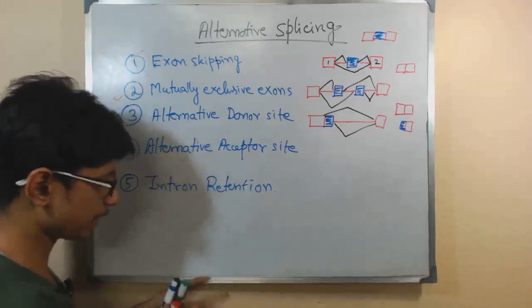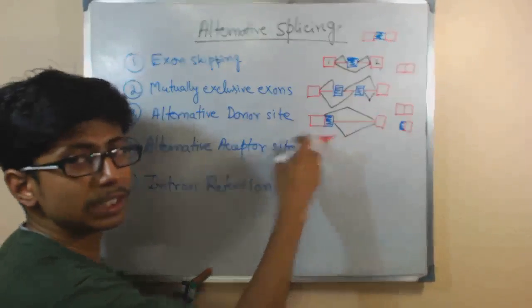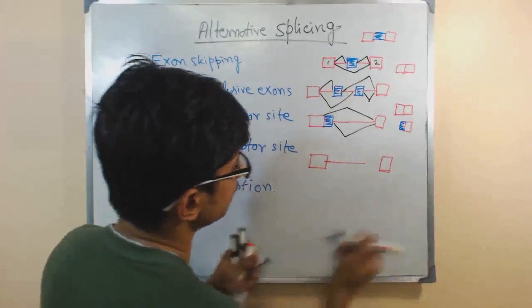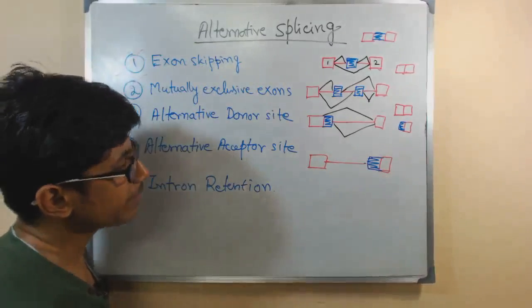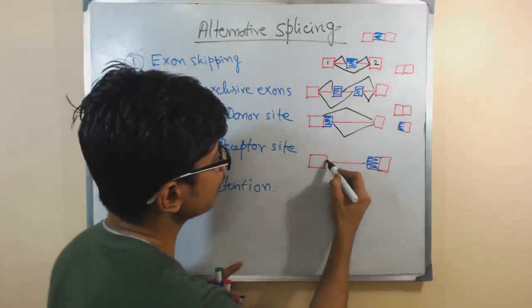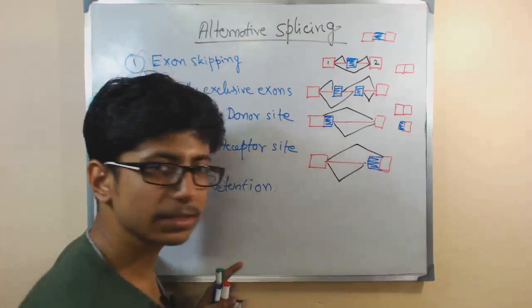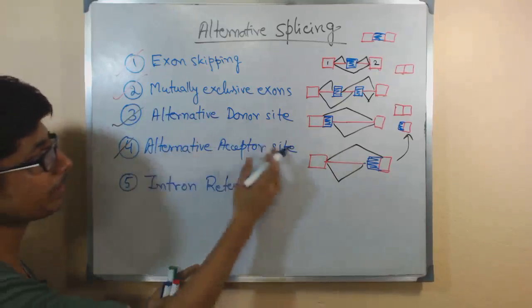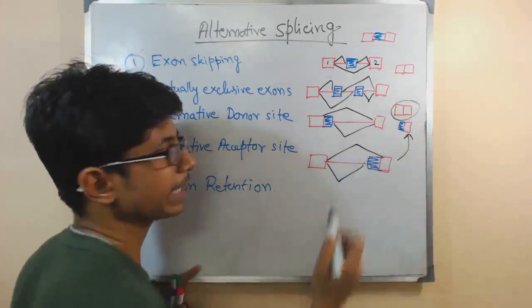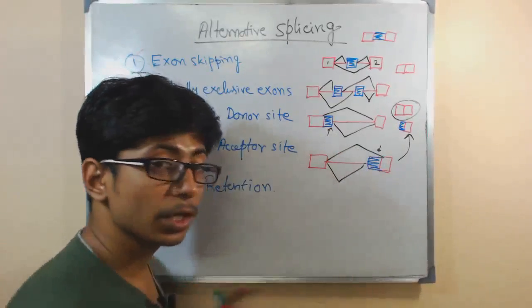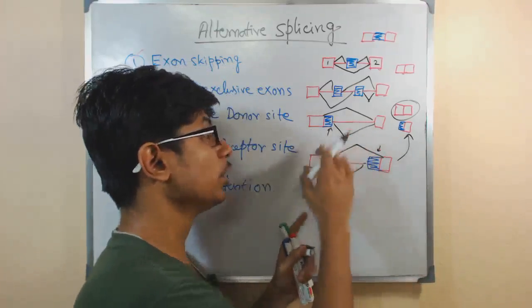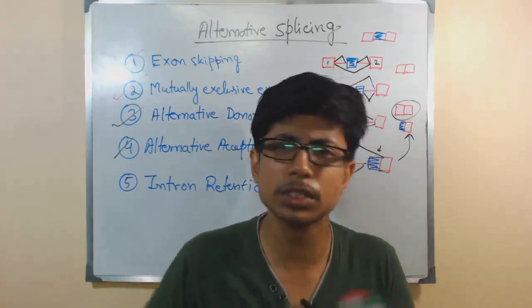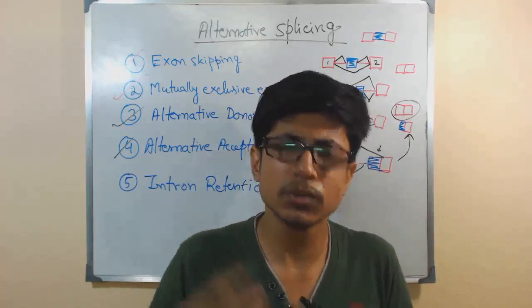The fourth mechanism is the alternative acceptor site — the same concept but on the acceptor side. Instead of using the normal acceptor site, an alternative acceptor site is used. So instead of getting the expected exon combination, we get a different one. Both alternative donor and alternative acceptor sites produce different mRNA because an alternative splice site is doing the job, so we don't need the original exon for completion of splicing.